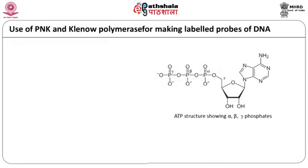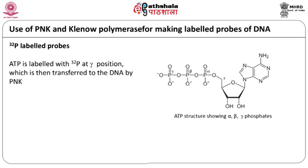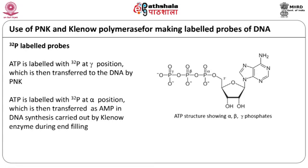An application of polynucleotide kinase and Klenow polymerase is to label DNA at the 5' end. This is important in preparing probes used for detecting a specific gene in transgenic plants. Gamma-labeled ATP is used with polynucleotide kinase and the labeled phosphate is transferred to the 5' end of DNA. Klenow enzyme, which is used for end filling of overhangs created by restriction enzyme digestion, can also be used for making labeled probes. In this case, the alpha phosphate in ATP is labeled, which is inserted into the DNA as AMP during DNA synthesis.